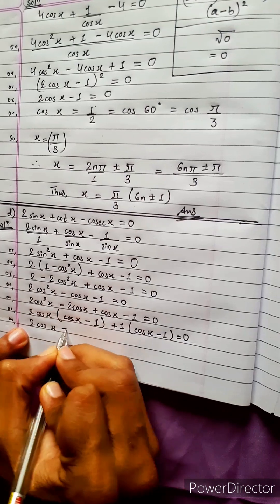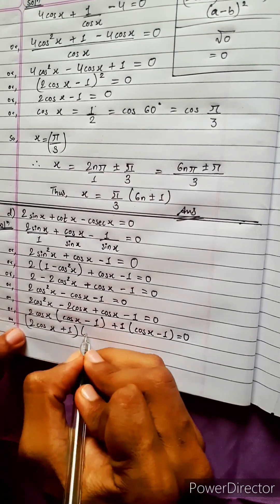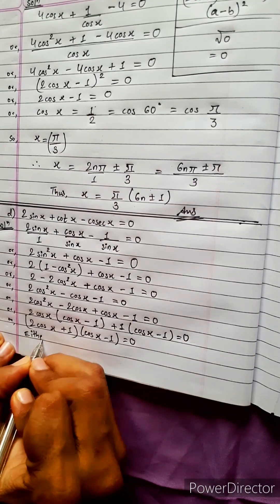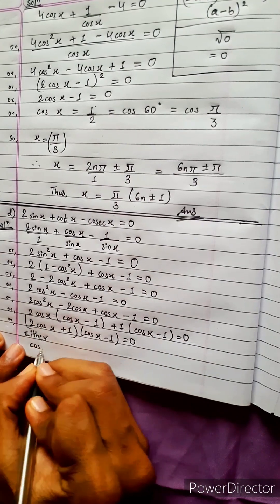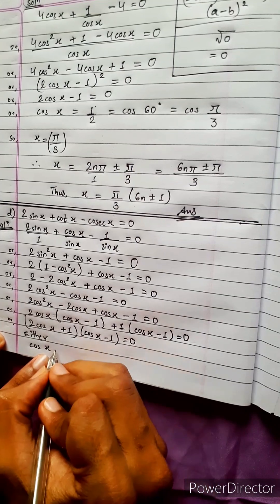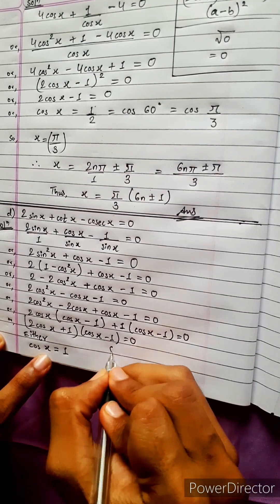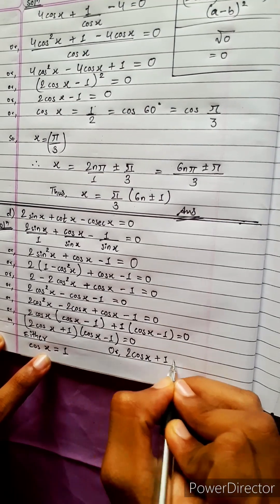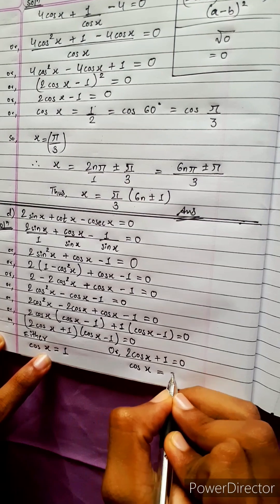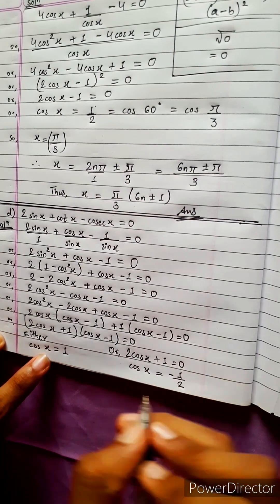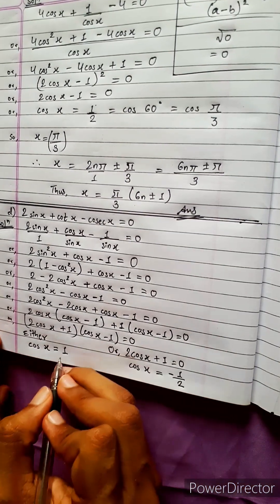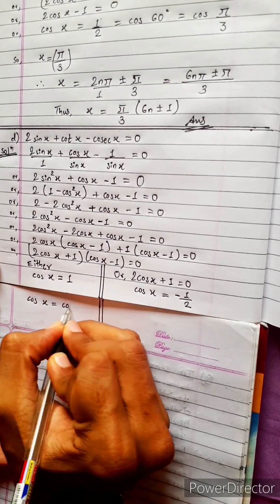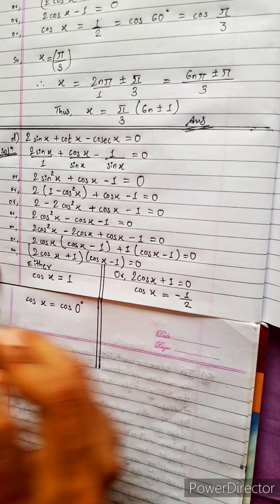Factoring gives (2cos x + 1)(cos x - 1) = 0. By the either-or principle: either cos x - 1 = 0, giving cos x = 1, or cos x + 1/2 = 0, giving cos x = -1/2.